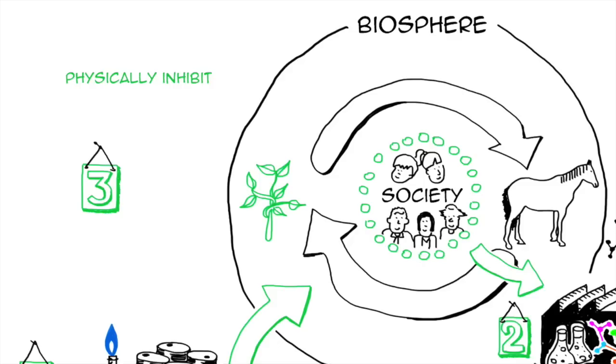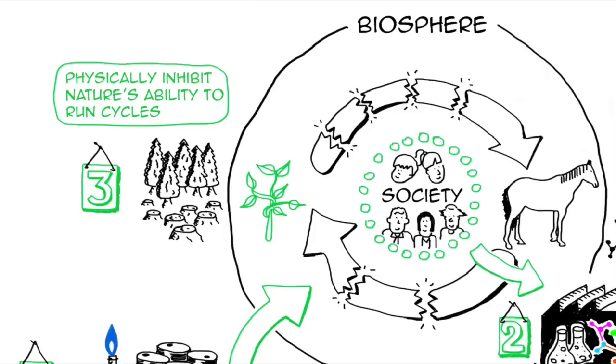The third one is that we physically inhibit nature's ability to run the natural cycles. So how do we do that? For example, by chopping trees at a faster rate than they can grow...